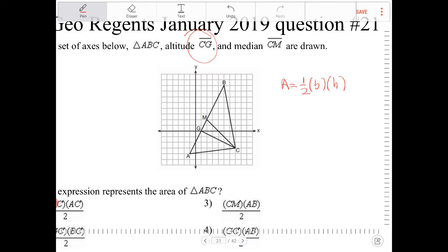So CG, being that that is the altitude, it will be perpendicular to segment AB. So AB is going to be our base. So the area is going to be one half times the segment AB times the segment CG.